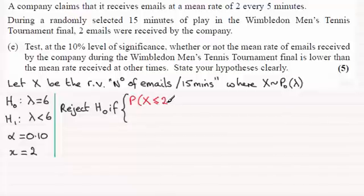You could reject the null hypothesis if we have two possible situations here. I'll do them in color so you can see each calculation going with each situation. We'll take here the probability of a random variable X being less than or equal to two. What are the chances of getting less than or equal to two emails given that the null hypothesis is true, that is the mean is equal to six?